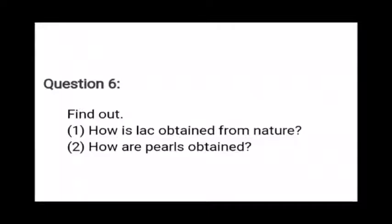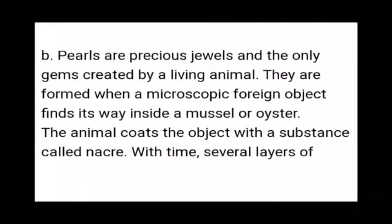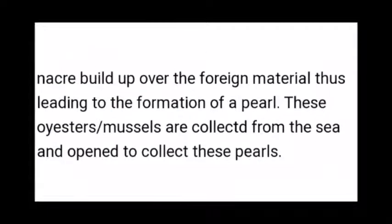The second question: How are pearls obtained? Pearls are precious jewels and the only gems created by living animals. They are formed when a microscopic foreign object finds its way inside a mussel or oyster. The animal coats the object with a substance called nacre. With time, several layers of nacre build up over the foreign material, leading to the formation of a pearl. These oysters and mussels are collected from the sea and opened to collect the pearls. Stay safe, thank you so much.